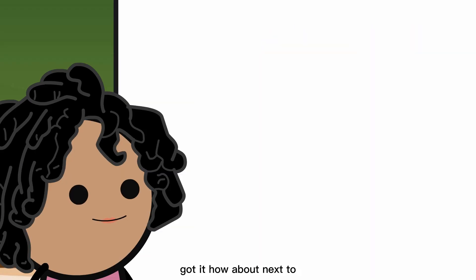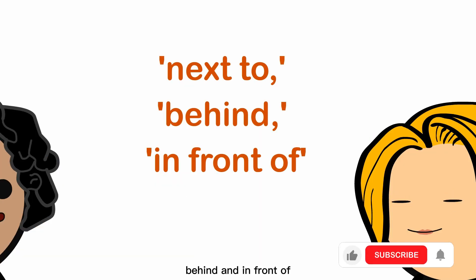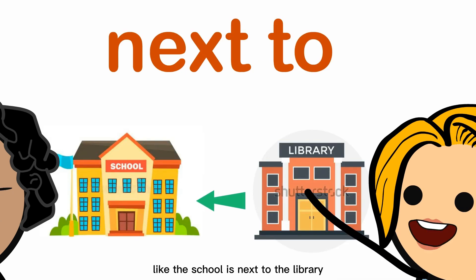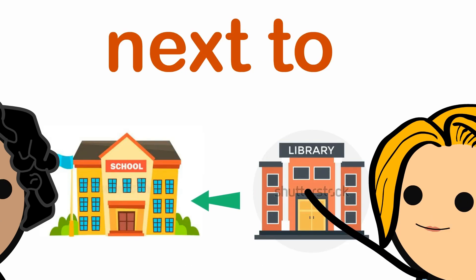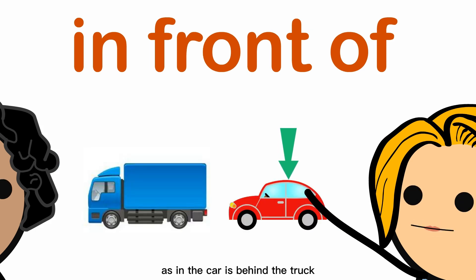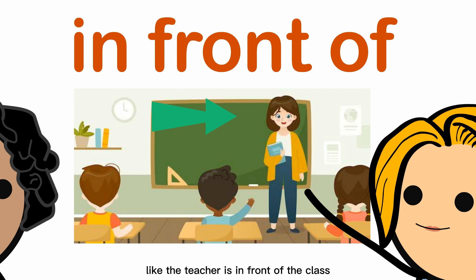Got it. How about 'next to,' 'behind,' and 'in front of'? 'Next to' indicates proximity, like the school is next to the library. 'Behind' is used when something is at the back of another object, as in the car is behind the truck. And 'in front of' is the opposite, indicating something is at the front, like the teacher is in front of the class.